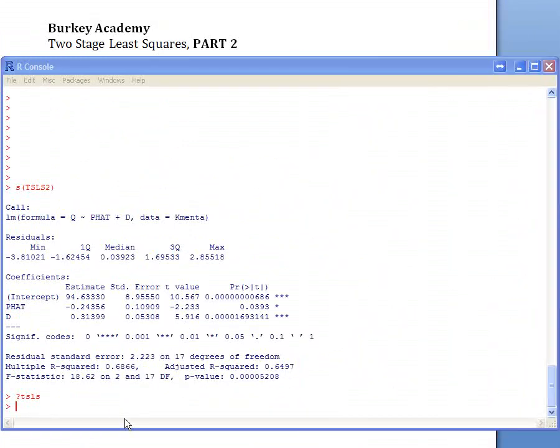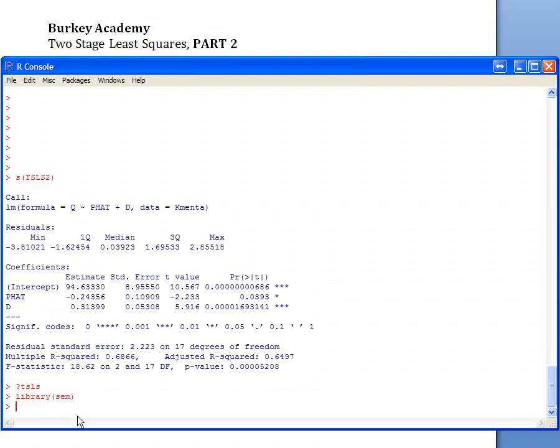In R, if you have already loaded the library, you have to download and load the library called SEM. If you've done that and you want to run a two-stage least squares model, to estimate the demand function, basically the command is, I'm just going to copy and paste this from the help file so I don't have to type it.